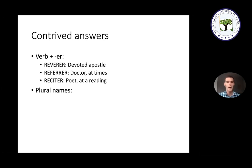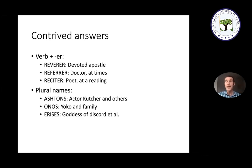Another type of contrived answer that people get especially annoyed with is plural proper names — some random proper name usually associated with only one person gets pluralized, like 'Kutchers' meaning Ashton and others, or 'Onos' meaning Yoko and family, or 'Eris' meaning heiresses or goddess of discord. You can understand the annoyance — there's really never a time you need to refer to multiple heiresses. Nevertheless, these answers illustrate language's powerful mechanism for creating new words. So the next time you encounter a contrived crossword answer, take it as a chance to reflect on the incredible power language gives us to create infinitely many words we've never encountered before.